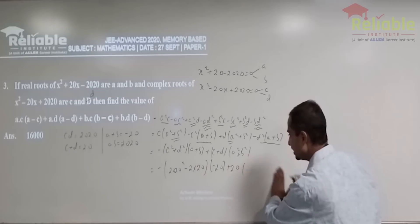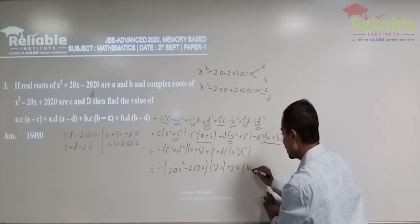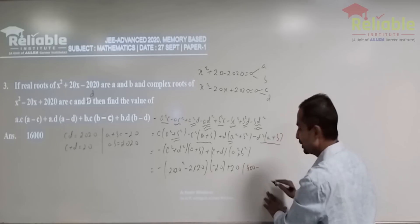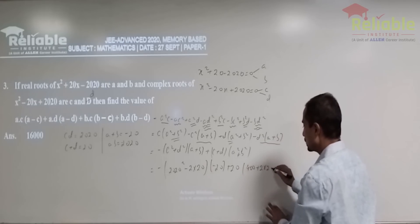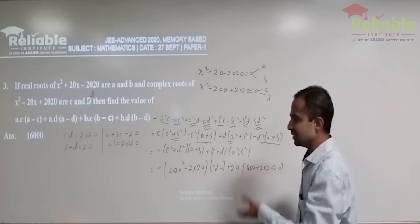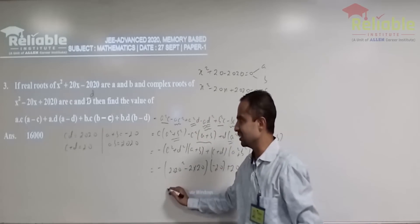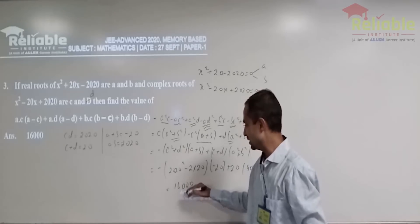Sorry, A plus B whole square. A plus B whole square is 400 minus two AB, twice 2020. So, if you were to solve this, you can get simplified to 16,000.